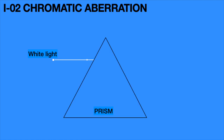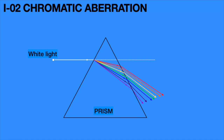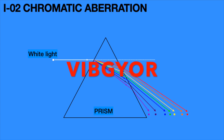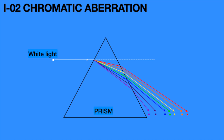If the prism is not there, then the white light ray goes straight without any deviation, but due to the presence of the prism, the white light ray splits into seven colors. These seven colors are called VIBGYOR — that means the formed images are in the order of violet, indigo, blue, green, yellow, orange, and red.